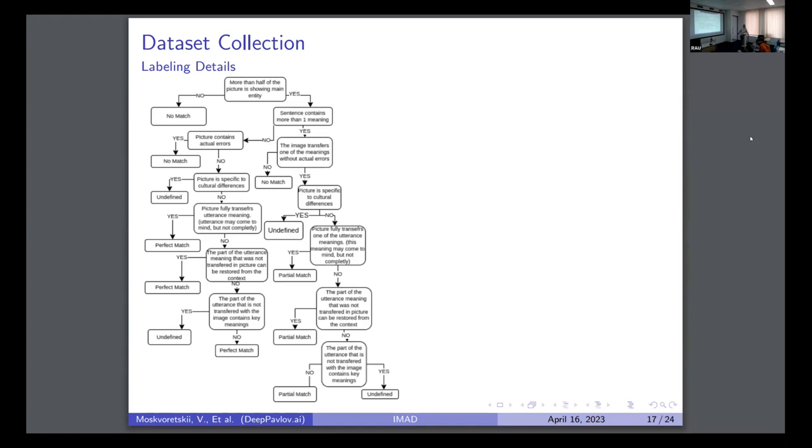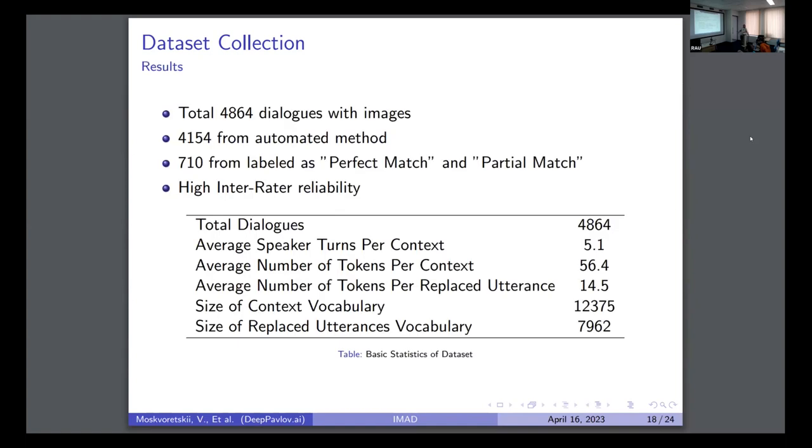So this is the methodology we created that resulted in high inter-reliability. Here are basic statistics. We get about 5,000 samples. Here are automatically generated, and here are labeled as perfect match and partial match from the assessors.